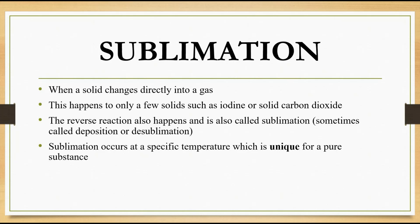Most solids change to gas by passing through the liquid state first. However, sometimes solids change directly to gases and skip the liquid state. The reverse can also occur — sometimes gases change directly into a solid. Sublimation is the process in which a solid directly changes to a gas. This occurs when solids absorb enough energy to completely overcome the forces of attraction between them. You might be asked for examples of solids that undergo sublimation — solid carbon dioxide, also known as dry ice, is an example.